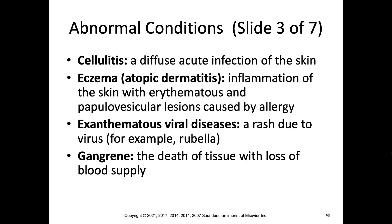Exanthematous viral diseases are rashes due to a virus — for example, developing a rash from rubella (measles) is an exanthematous viral disease. Gangrene is the death of tissue with loss of blood supply, and pretty much the only option is amputation. In studying history — the Revolutionary War, War of 1812, Civil War — many wounds developed gangrene without antibiotics to treat them, requiring amputation.